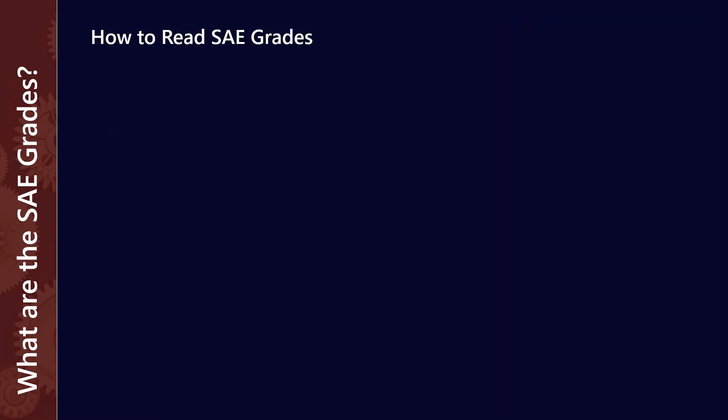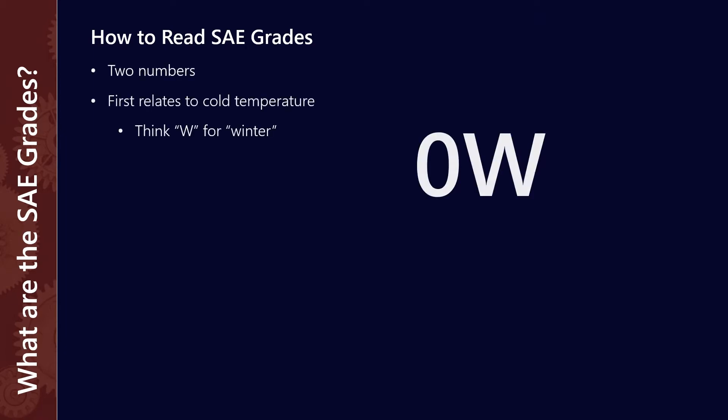How to read SAE grades is relatively simple. It consists of two numbers. The first relates to cold temperature performance. The W you can think of as standing for winter, because back in the day, especially in harsh environments like Canada or parts of Northern America, you would actually need to change the lubricant in your car depending on the season, as cold temperatures meant standard grades weren't effective.